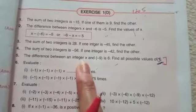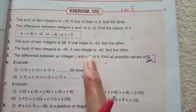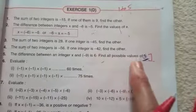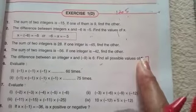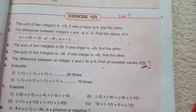This question is similar to question number 2. The difference between an integer x and -9 is 6. Right, difference between the two integers is 6. Find all the possible values. How many values will be possible? Two values.